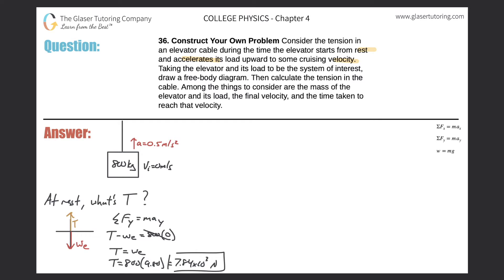Now, once the elevator starts accelerating upward, what do you think will happen to the tension in the cable — will it go up or go down, and why? Think about that. Now let's look at when it's accelerating. Let's draw a free body diagram for the case when acceleration equals 0.5 meters per second squared.